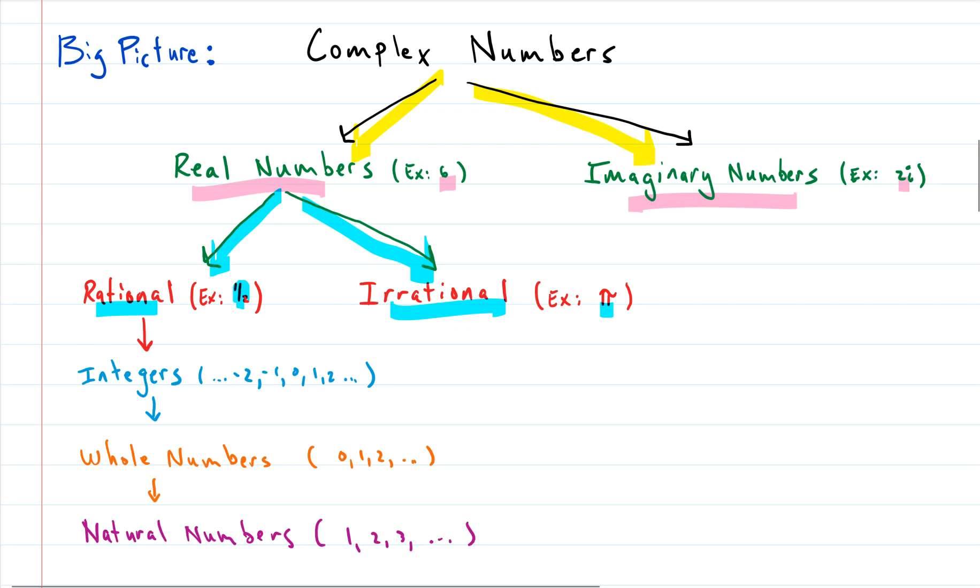So beneath the rationals we have a smaller subgroup which is the integers. The integers are negative two, negative one, zero, one, two, and on in both directions. And then inside of that we have another smaller group called the whole numbers, and that is just the positive integers plus zero.